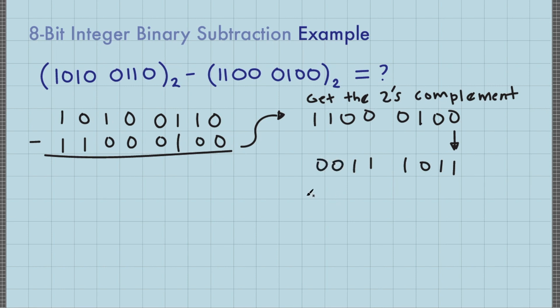Next, add 1 to its least significant bit. 1 plus 1 is 0, carry 1. 1 plus 1 is 0, carry 1. And this is 1. Then copy the remaining bits: 1, 1, 1, 0, 0.